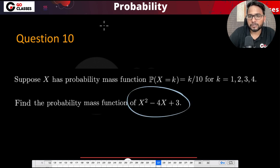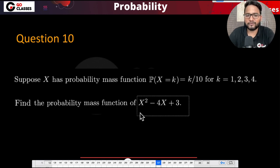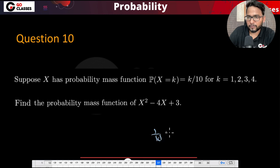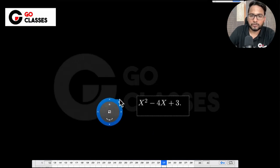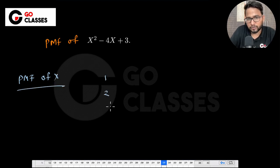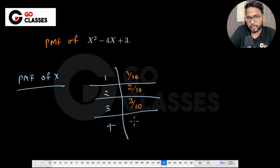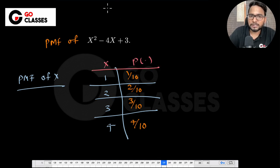Now a new example: suppose X takes values 1, 2, 3, 4 with P(X=k) = k/10. So P(X=1)=1/10, P(X=2)=2/10, P(X=3)=3/10, P(X=4)=4/10. We want to find the PMF of Y = X²-4X+3. First, compute the possible values of Y by substituting each value of X.